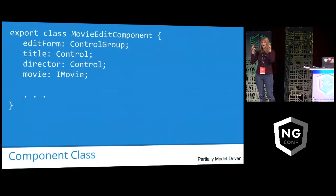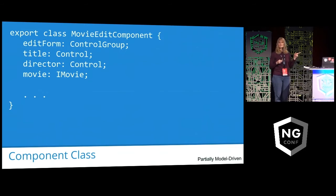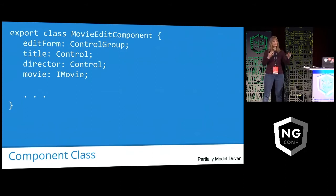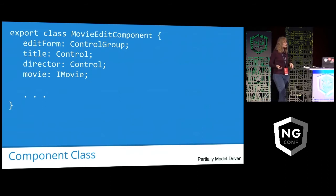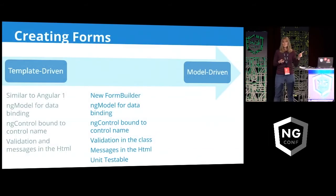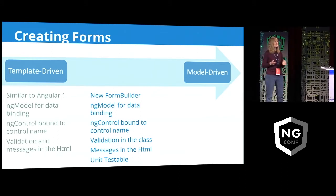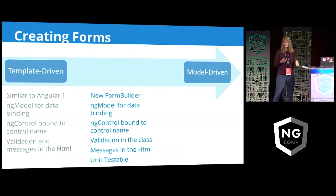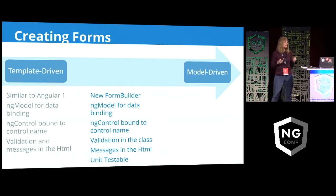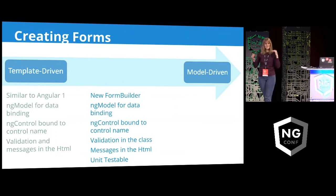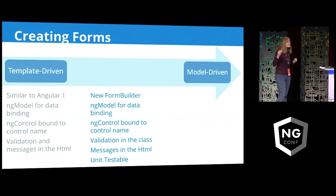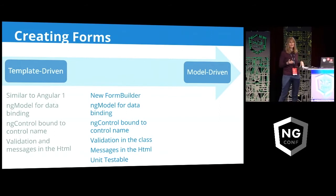There is no form object per se in Angular — instead it's a control group. Any group of controls can be a control group, and you can have a control group within a control group. So we could have an address block tracked separately from the overall form. Our controls are declared as type control. When we take our step to the right, we're using the new form builder. We're still using ng-model so we don't need a default value or to manage any of that. We're using ng-control to bind between our template and our code. Our validation is now in the class but our messages are still in the HTML.